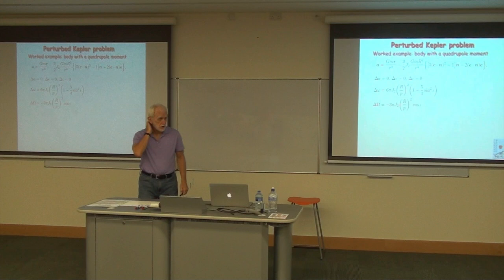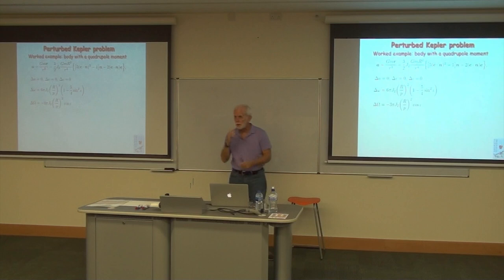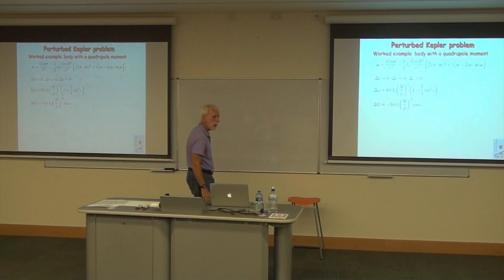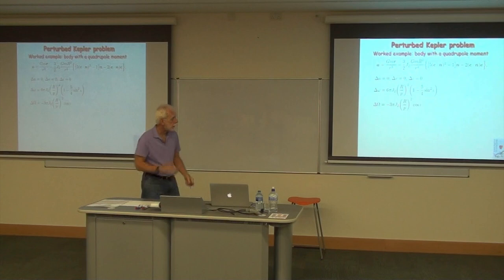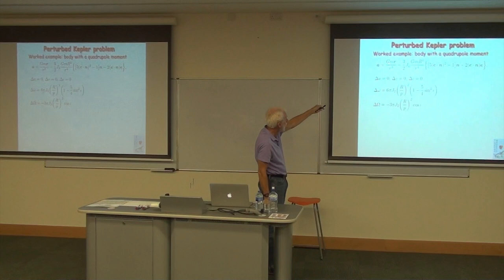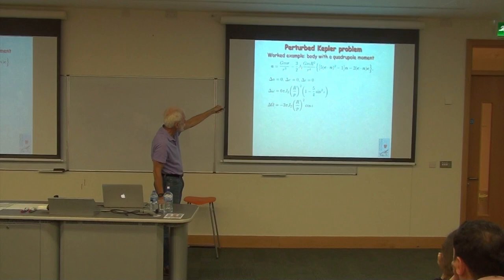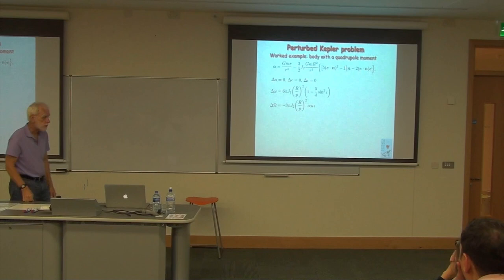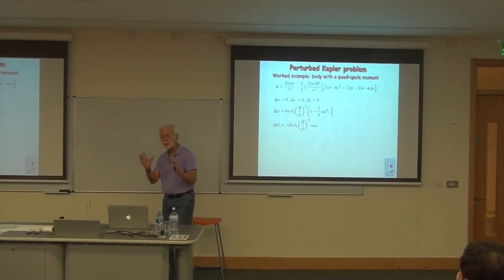Yesterday we ended at section 5.05, but I want to do one more example of our perturbed Kepler problem. This is the problem where you have a test body or a point mass orbiting a body that has a quadrupole moment. Our equation of motion then gives the relative acceleration between the two bodies as a Newtonian term, plus a term that is proportional to J2, the quadrupole moment of one of the bodies. This could be a satellite orbiting the Earth, or a small black hole orbiting a supermassive black hole with a quadrupole moment because it's a rotating black hole.